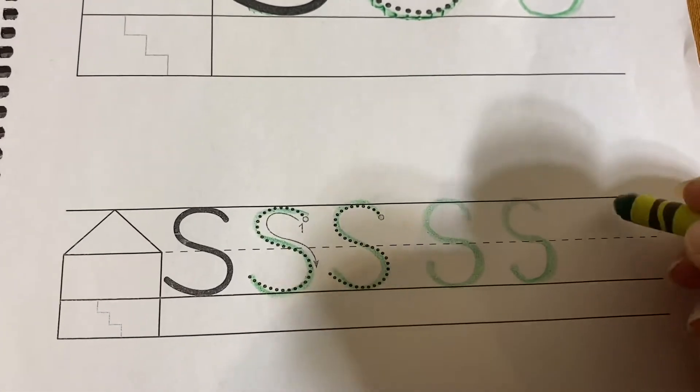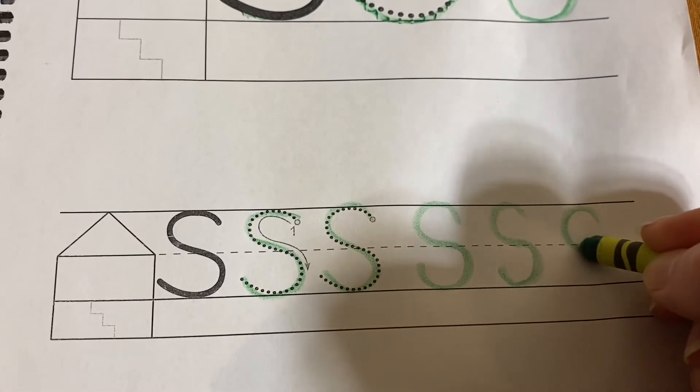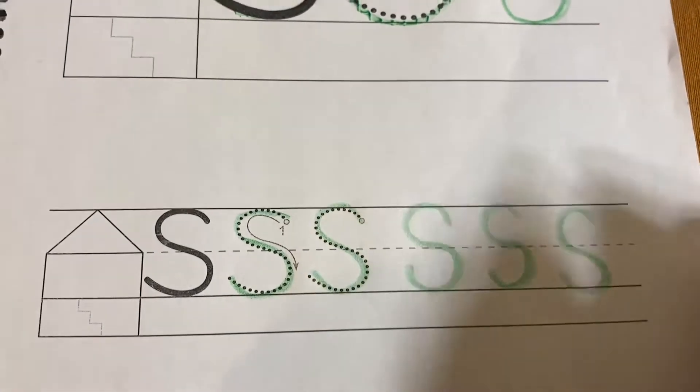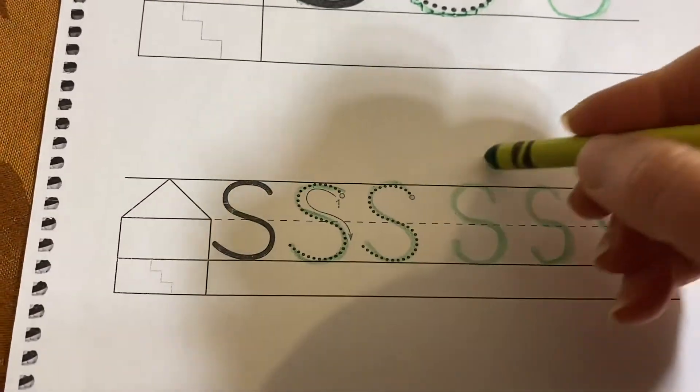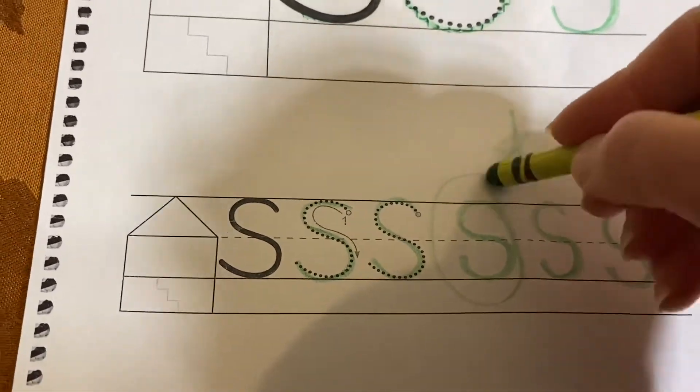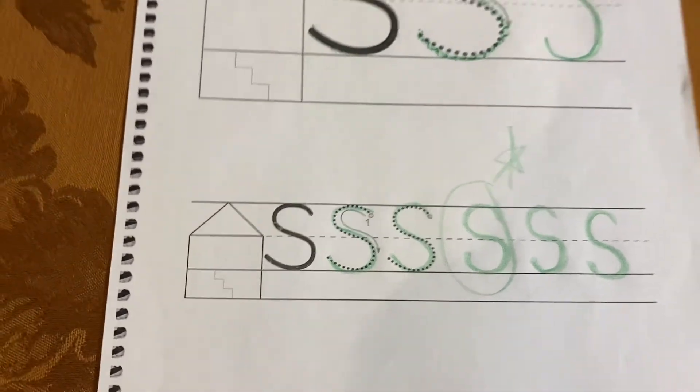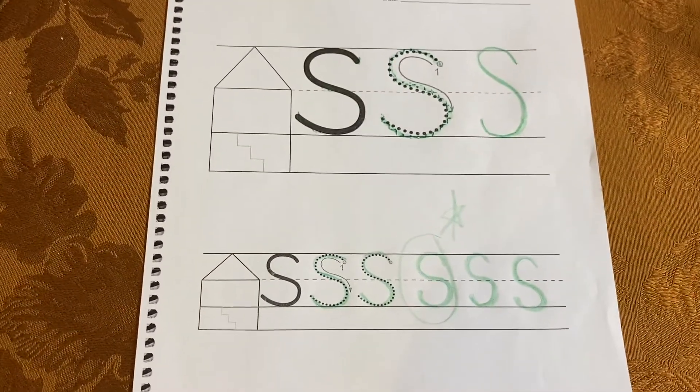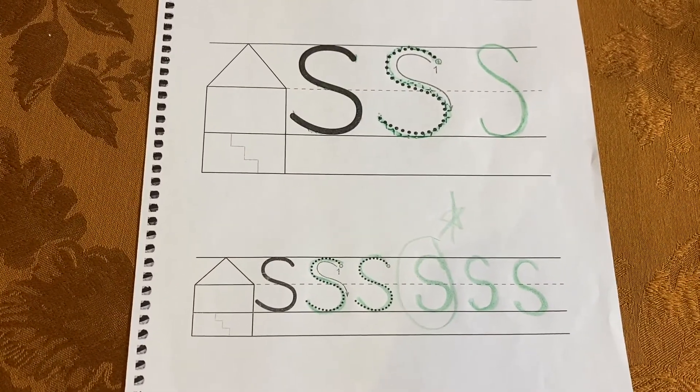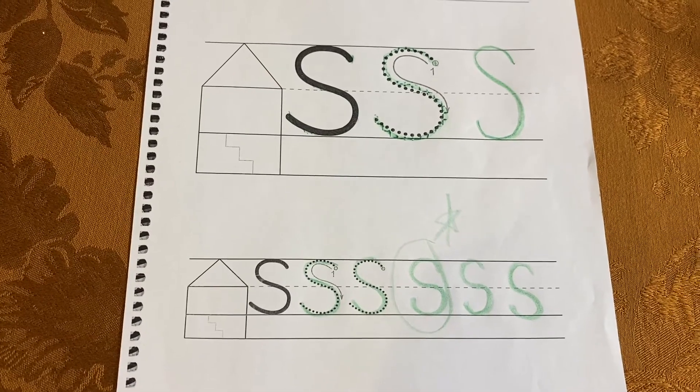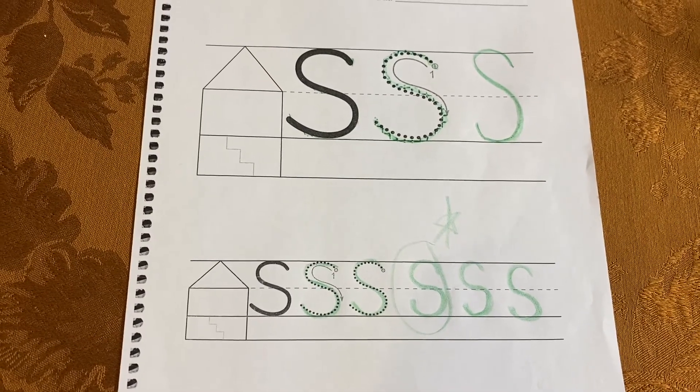They're not always perfect. S is one of the hardest letters to make. Very tricky. I'm going to say I like this S the best and give it a star. See if you like one of your S's best and give it a star. When you are done, you can put away your bumpy screen and your green crayon and have a great day.